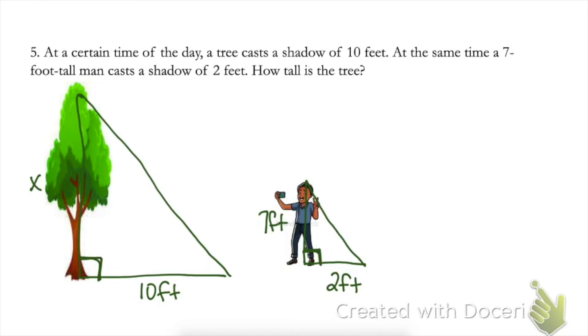First of all, we're going to assume that the tree is growing straight up and the man is standing straight up. So these are right triangles. So I have 90 degrees in the bottom left of both of my triangles. The other aspect here is the sun. The sun is casting the same angle onto these, the tree and the man. So that this angle up here is the same for both of them.